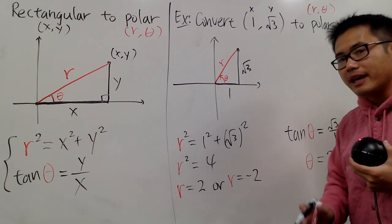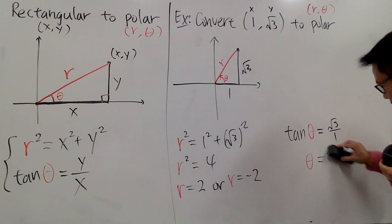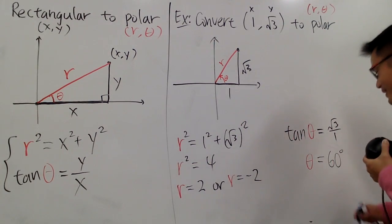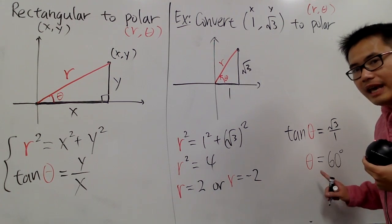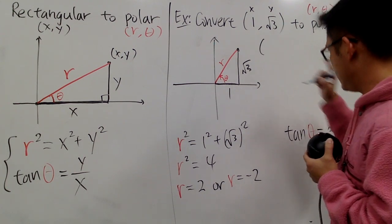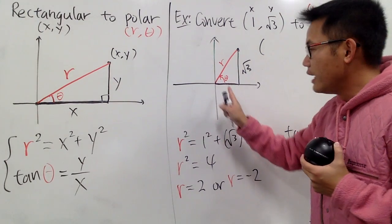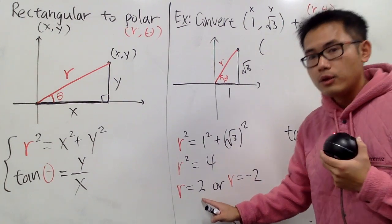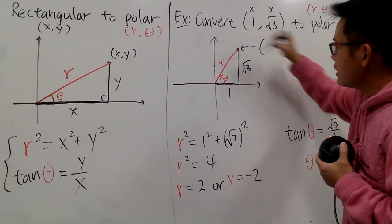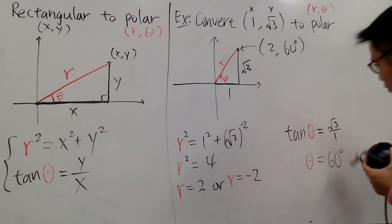Depends on the angle you use, you may use positive r or negative r. For the first representation: if I use theta = 60 degrees, that means I turn from the standard position 60 degrees, and I can see the point right in front of me. I go forward with distance 2 — that's the positive r. So the first representation of this point is (2, 60°), or equivalently (2, π/3).